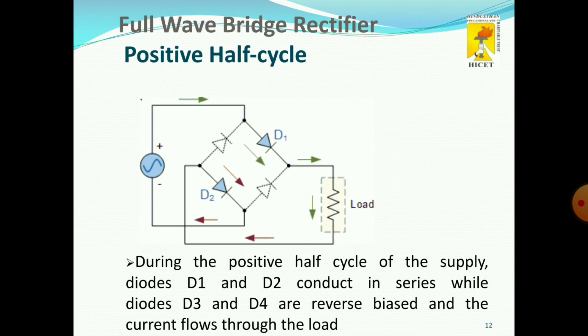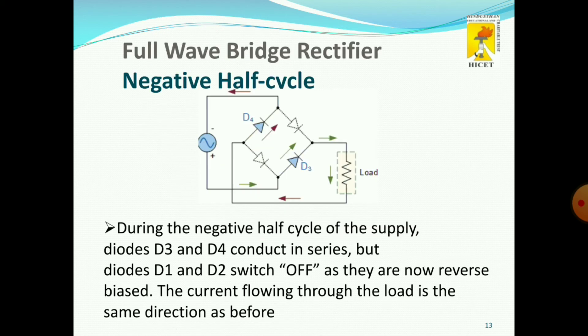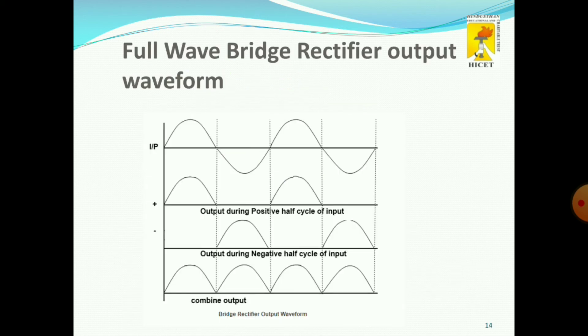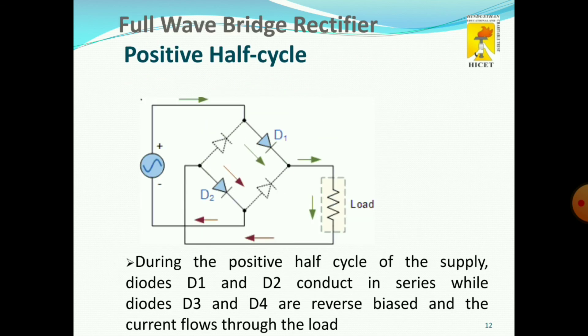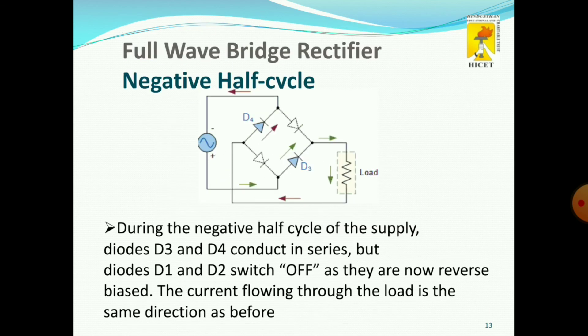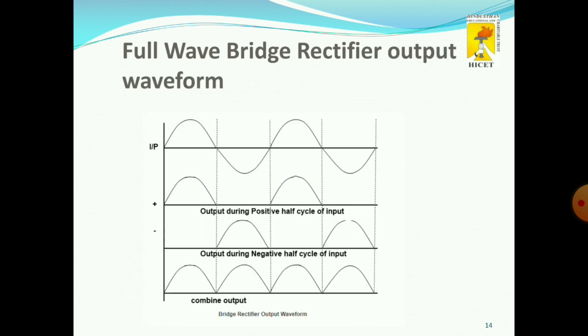During the positive half cycle, diodes D1 and D2 conduct, so the current path will be AC source, D1, RL, and D2. During the negative half cycle, D1 and D2 are in reverse bias condition, and D3 and D4 are in forward bias condition. The current path will be D3, RL load, and D4. During both positive and negative half cycles we get the output, meaning continuous output is generated.